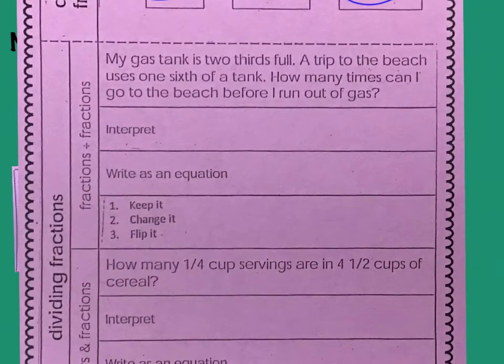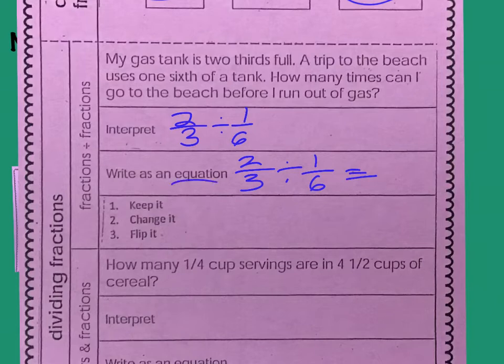So, let's explore that just a little bit. My gas tank is 2 3rds full. A trip to the beach uses 1 6th of a tank. How many times can I go to the beach before I run out of gas? So, what it's saying here is we have 2 3rds divided by 1 6th. Okay? So, that's what it's saying there. So, when it wants us to write an equation, that's pretty much the same thing as interpreting it. So, we're going to go 2 3rds divided by 1 6th equals. That's an equation, always has an equal sign. So, that's why we're putting that as an equal sign right there.